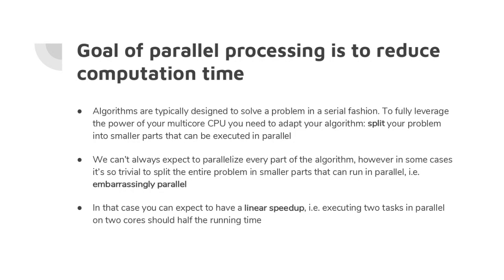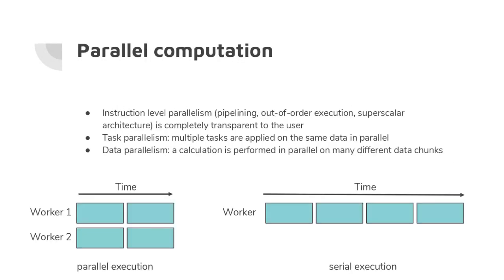For embarrassingly parallel problems you can expect a linear speedup: if you break your task in two and use a core to compute each half of the data, you can double your runtime savings. Here's an example of parallel execution — on the left we have two workers, which might be cores in one computer or two different computers. One worker running all four parts of a task sequentially takes twice as long as two workers running them in parallel, giving a linear speedup.